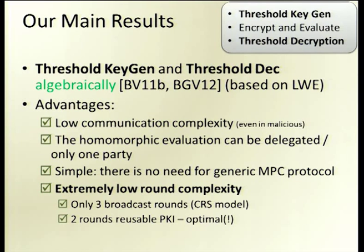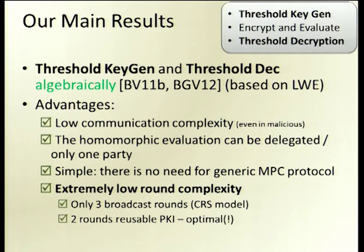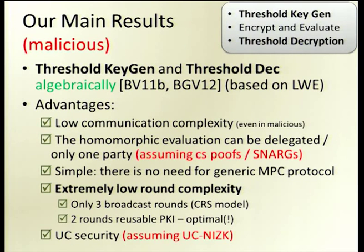Our protocol is only three broadcast rounds. The question of round complexity and what is the minimal number of rounds is a theoretically interesting question. We show the first three-round protocol for any function in the CRS model — the common reference string model. In addition, our protocol is only two rounds in the public key infrastructure, which is optimal. Our results hold for the semi-honest and malicious settings, where in the malicious setting we get security for any number of corrupted parties but need to add the assumption of non-interactive zero knowledge.